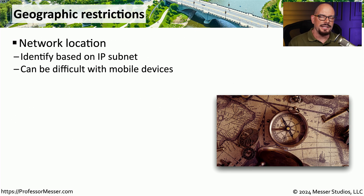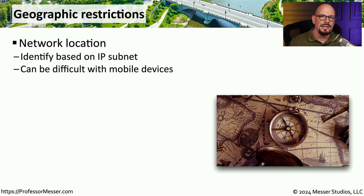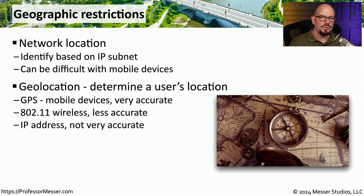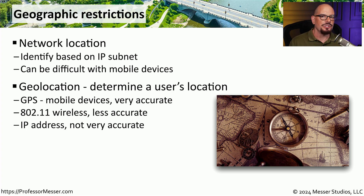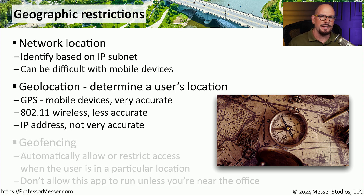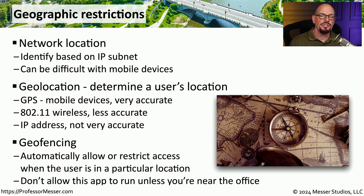Another way to limit access to data is through the use of a geographic restriction. We would identify where a user happens to be and assign different rights and permissions based on their location. This can sometimes be done with an IP address — if someone is connecting over a VPN, they might be assigned an internal IP address and given the rights expected for someone on the local network. But if they're connecting from a different state or country, we might change the permissions for that user. Since IP addresses are not always the most accurate, there are other ways to determine geographic location. We can use GPS to determine where a person is in the world, or use the name of the wireless network where someone is located to determine the location of the access point.